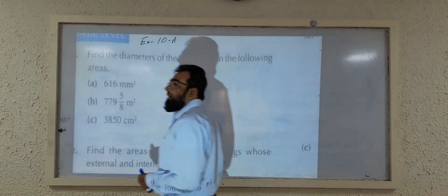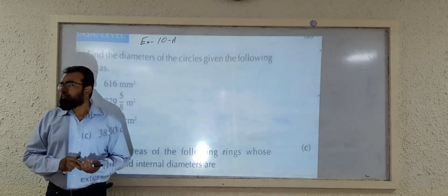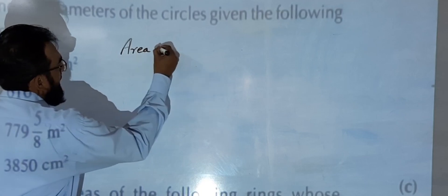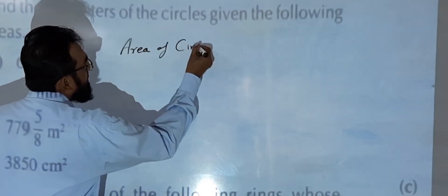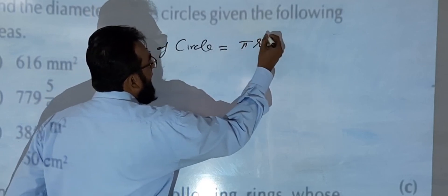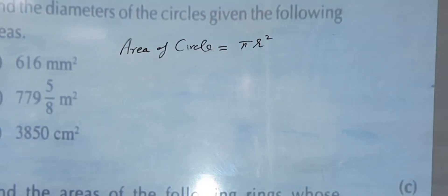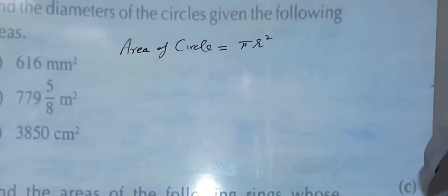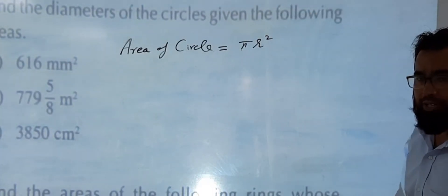Now you know that area of circle is equal to π r². We have to find out the diameter. Obviously, if we are able to find out the radius of the circle, then double the radius of the circle will be the diameter.